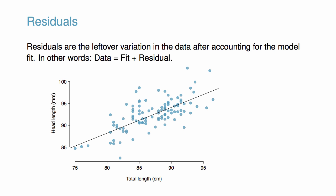Residuals are the leftover variation in the data after accounting for the model fit. In other words, data equals fit plus residuals. Notice each observation will have a residual. If an observation is above the regression line, then its residual, the vertical distance from the observation to the line, is positive. Observations below the line have negative residuals. One goal in regression is to pick the linear model so these residuals are as small as possible.